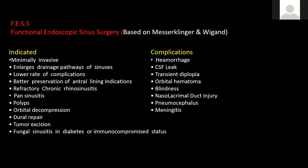The idea behind functional endoscopic surgery is getting patency of the ostium back by making an antrostomy to make it large, establishing ventilation and recirculation. You can visualize the sinus, remove nasal polyps, remove foreign objects, and drain sinuses from this approach. One of the minor forms is balloon sinuplasty, which is a kind of functional endoscopic sinus surgery. Indications include minimally invasive conditions, enlarged drainage when you want to achieve drainage by enlarging the ostium, lower rate of complications, and preservation of the antral lining.